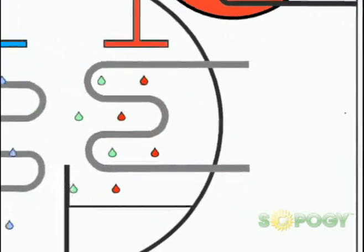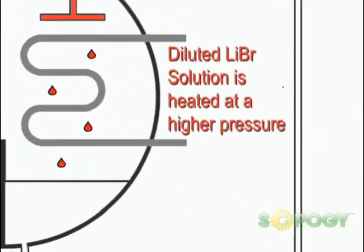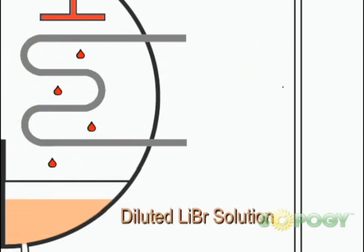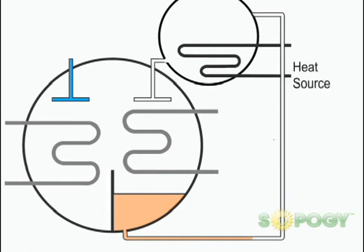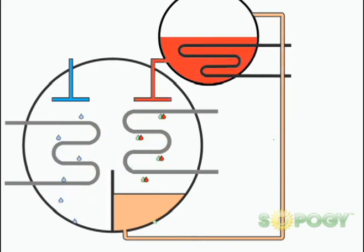The diluted solution, which contains the absorbed refrigerant vapor, is heated at a higher pressure. As lithium bromide becomes dilute, it loses its capacity to absorb water vapor. It therefore needs to be re-concentrated using a heat source. This leads to the vaporization of the refrigerant, and thus the solution is restored to its original concentration. The cycle keeps repeating itself to give the desired chilling effect.